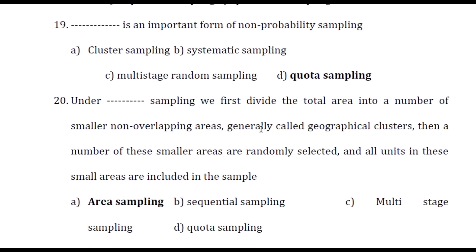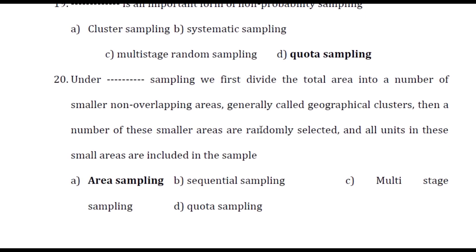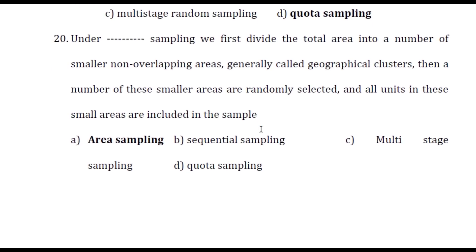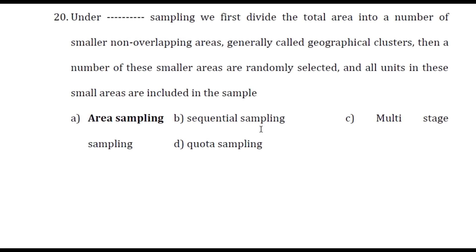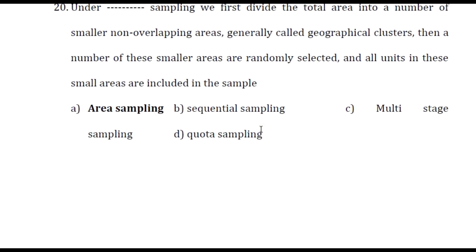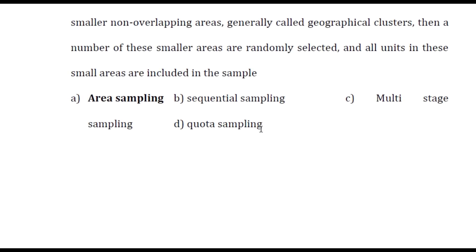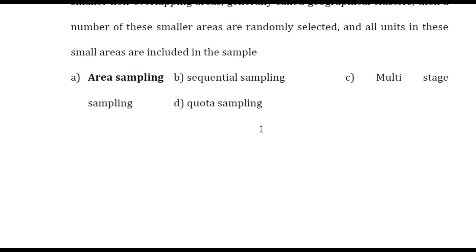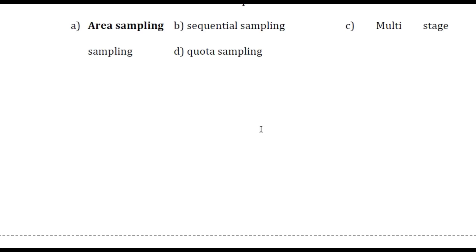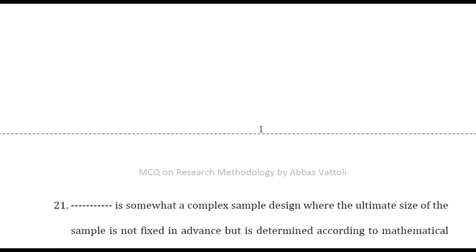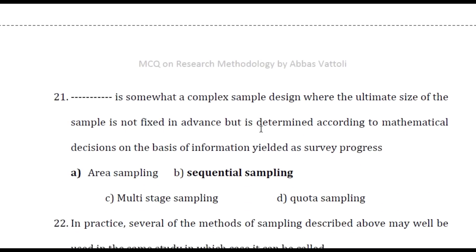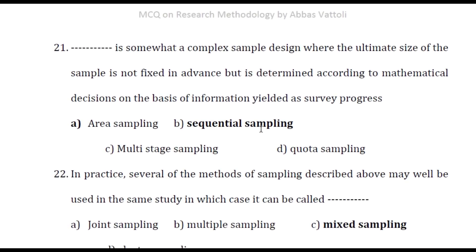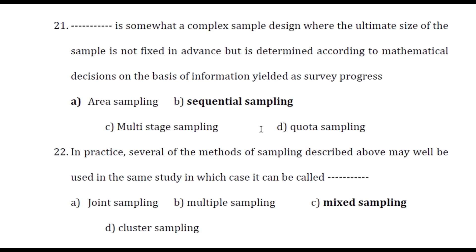Under area sampling, we first divide the total area into a number of smaller non-overlapping areas generally called geographical clusters. Then a number of these smaller areas are randomly selected, and all units in these smaller areas are included in the sample.